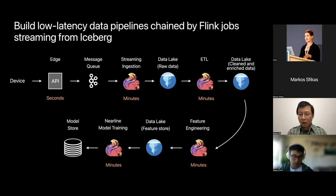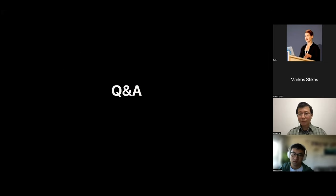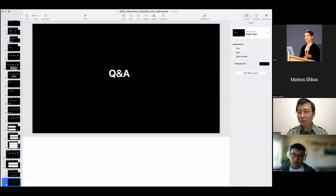To close: you can build low-latency data pipelines chained by Flink jobs streaming data from Iceberg, and potentially achieve end-to-end latency in minutes — maybe tens of minutes — instead of hours or days. I'll be happy to take any questions.